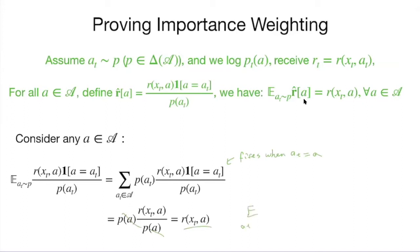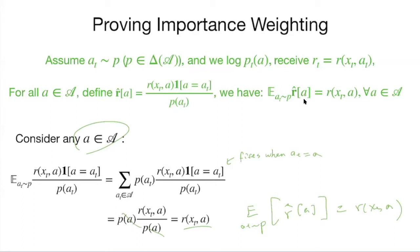This conclusion holds for any action A — not just the one you picked, but actions you haven't picked as well. Note: if you pick an action deterministically, you cannot do this. You need to do some sort of random trial. This importance weighting trick is used in clinical trials, which is why we often do randomized trials — we don't deterministically assign treatment to a patient; we flip a coin based on a distribution.